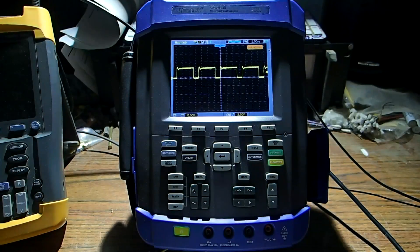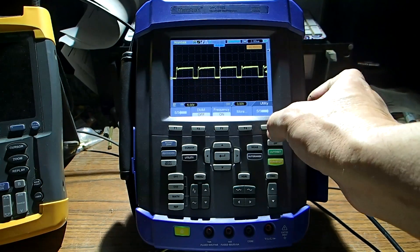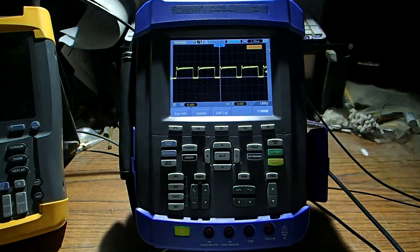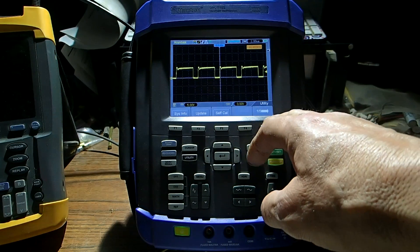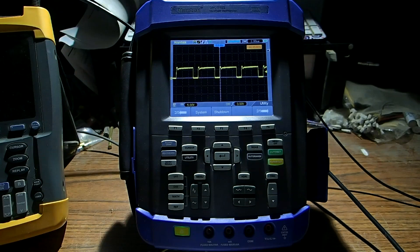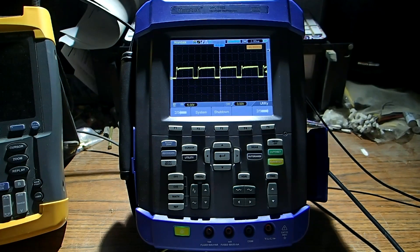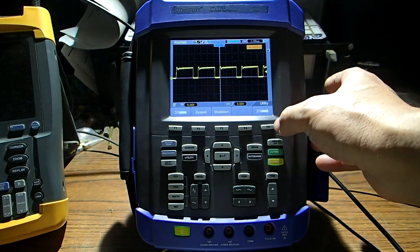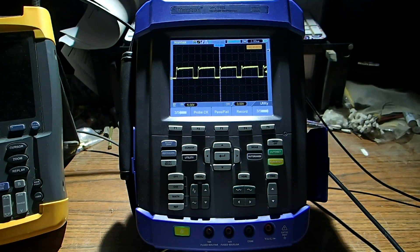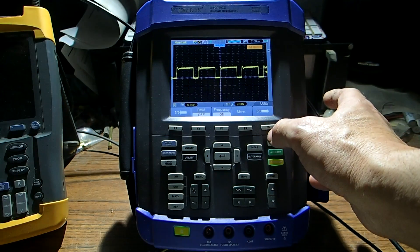One thing to do is when you get this scope is utility and you want to look at all these options that are in here and get to know where they're at. Basically it's navigation. Once you have navigation it's easier to work this scope. A little confusing at first it was to me but because I'm used to a Fluke. But this scope once you get to know what's going on there's pretty much no problem with it.